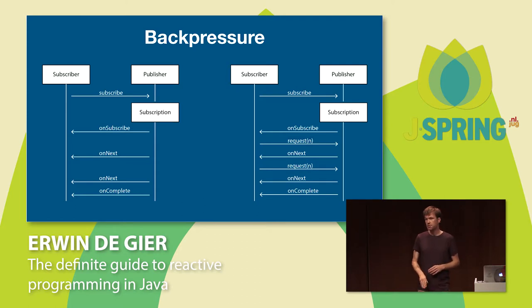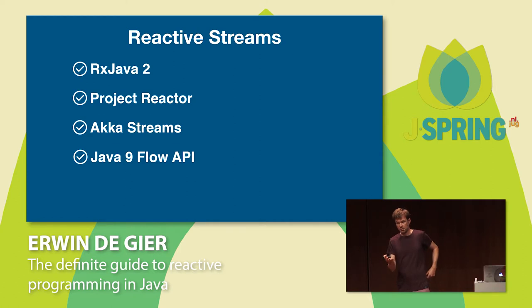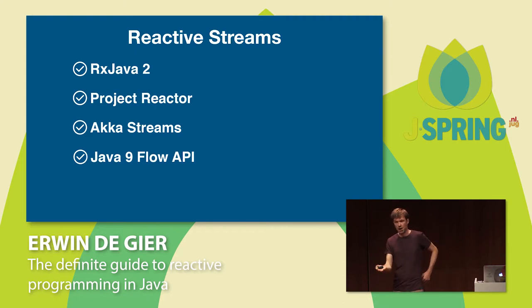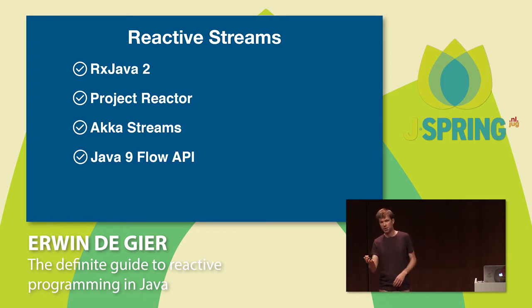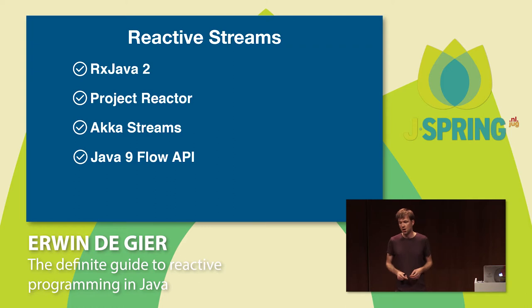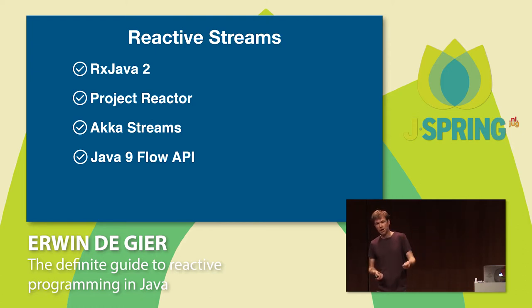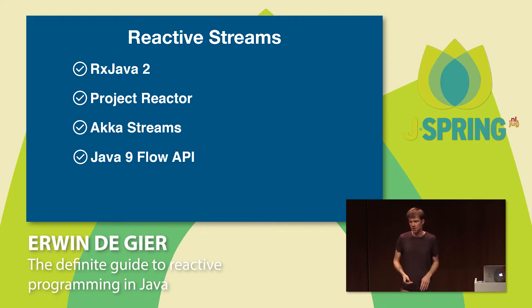Reactive Streams is a standard, which means there are different implementations available. The one I mentioned is RxJava 2. But we also have Project Reactor — and if you work with Spring, then Spring 5 has reactive APIs available which uses Project Reactor. There's also an implementation for Akka streams. There are also more specific implementations, like a Scala library for asynchronous JDBC operations — an implementation of the Reactive Streams standard specific only to JDBC, where RxJava and Project Reactor are more general-purpose.